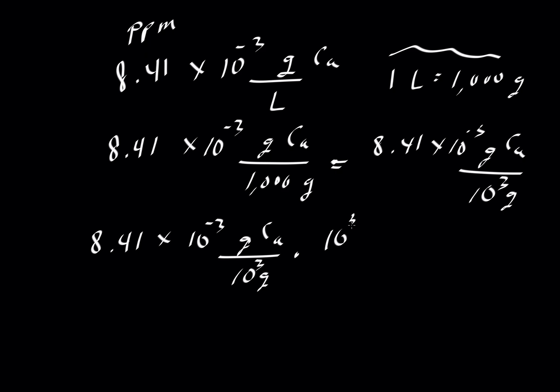We can multiply top and bottom by 10 to the 3. We multiply top and bottom by 10 to the 3 because we're not changing the concentration. The concentration is fixed by virtue of the fact that we have a solution that's in equilibrium with calcium fluoride. And we're assuming there are no other sources of calcium. So if we take this and multiply it by 10 to the 3 minus 3 plus 3, those will cancel out.